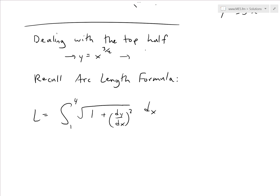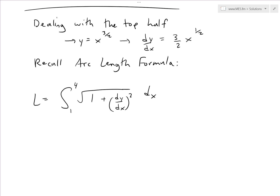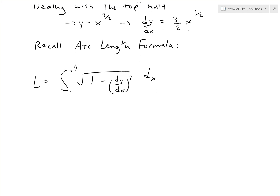The dy/dx is just the derivative. Using the power rule, you bring the 3 over 2 down and subtract 1 from the exponent, giving x to the power of 1 over 2. So dy/dx equals 3 over 2 times x to the 1 over 2. Plugging that inside, we get the integral from 1 to 4 of the square root of 1 plus (3 over 2 times x to the 1 over 2) squared dx.